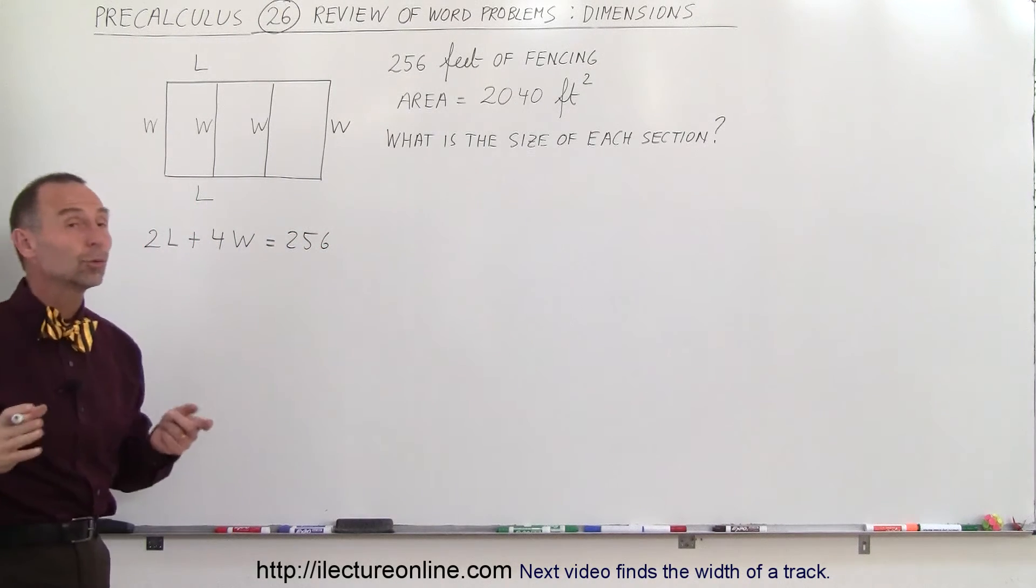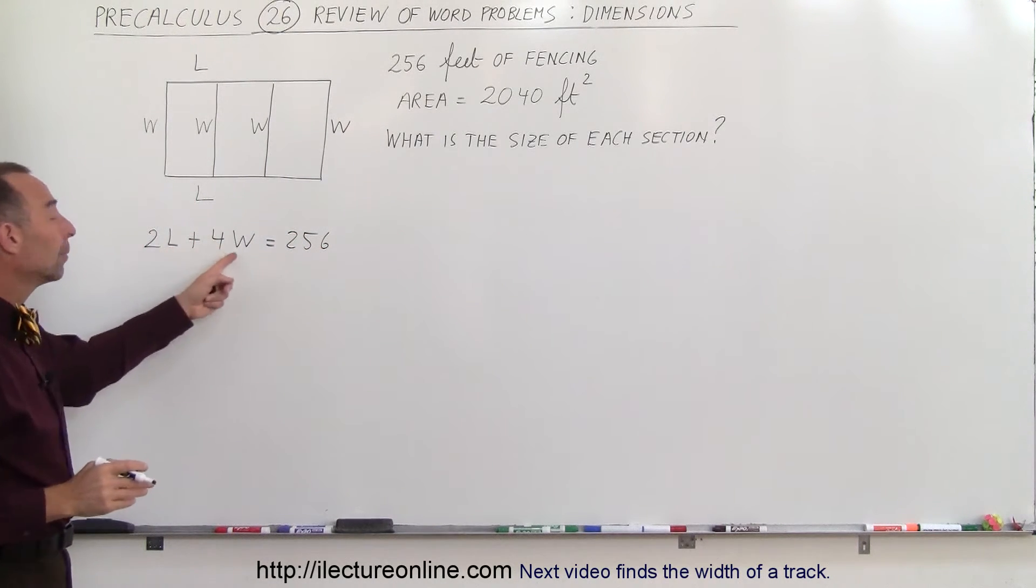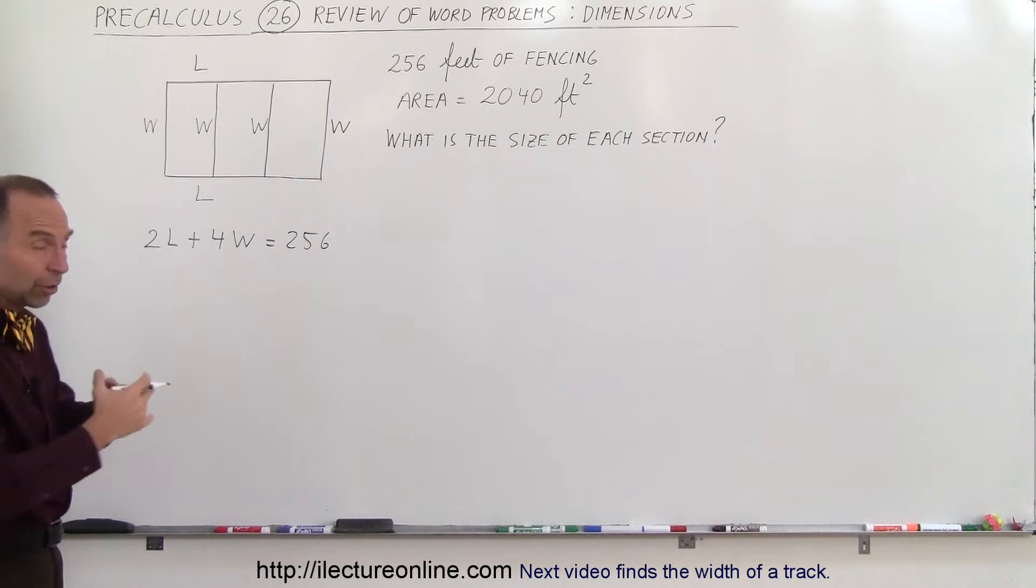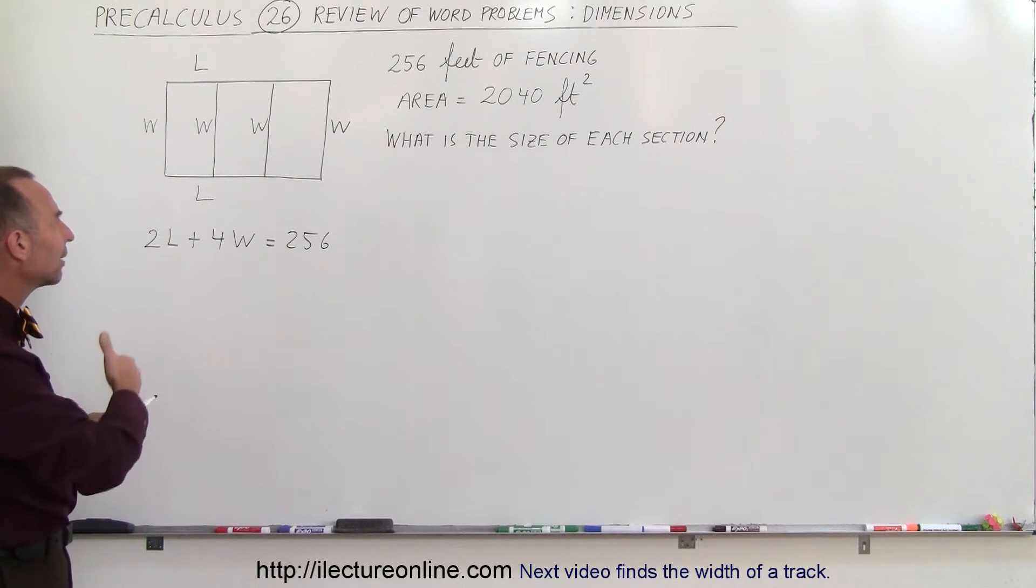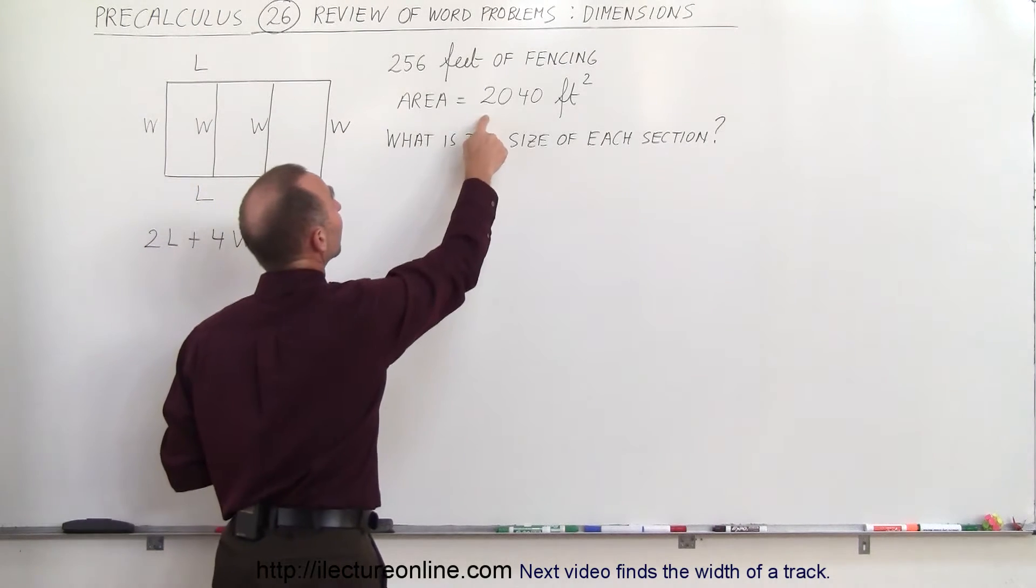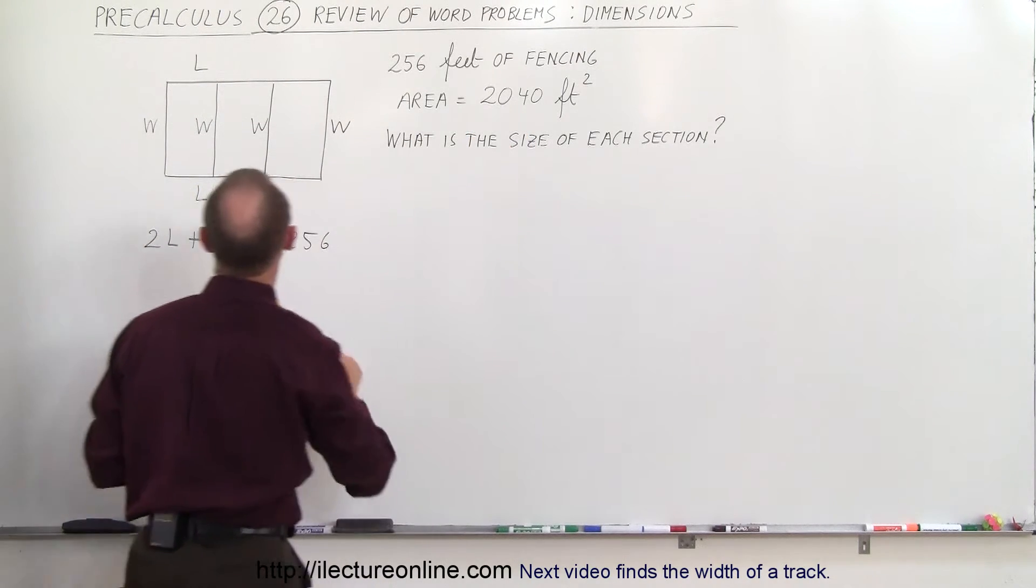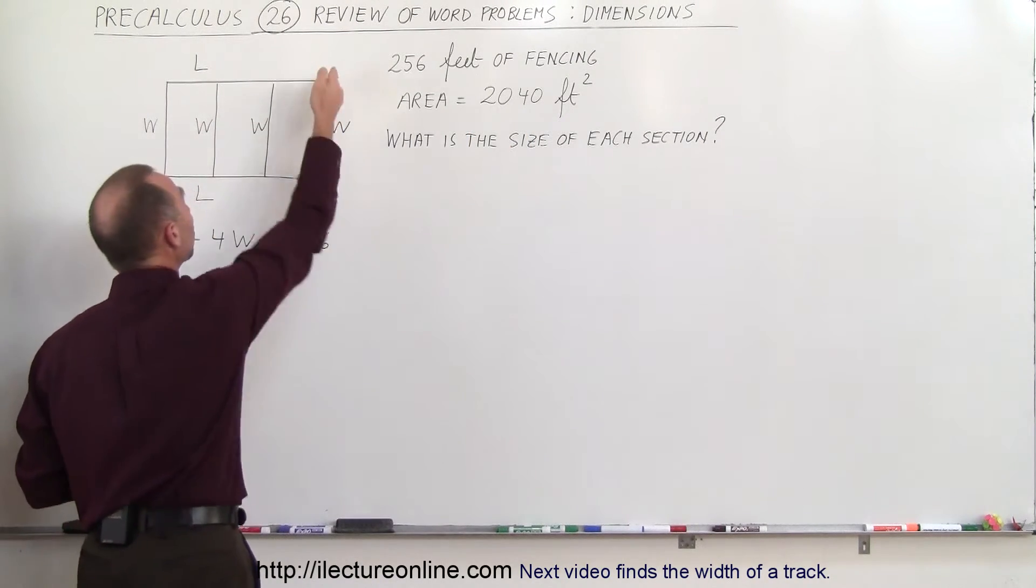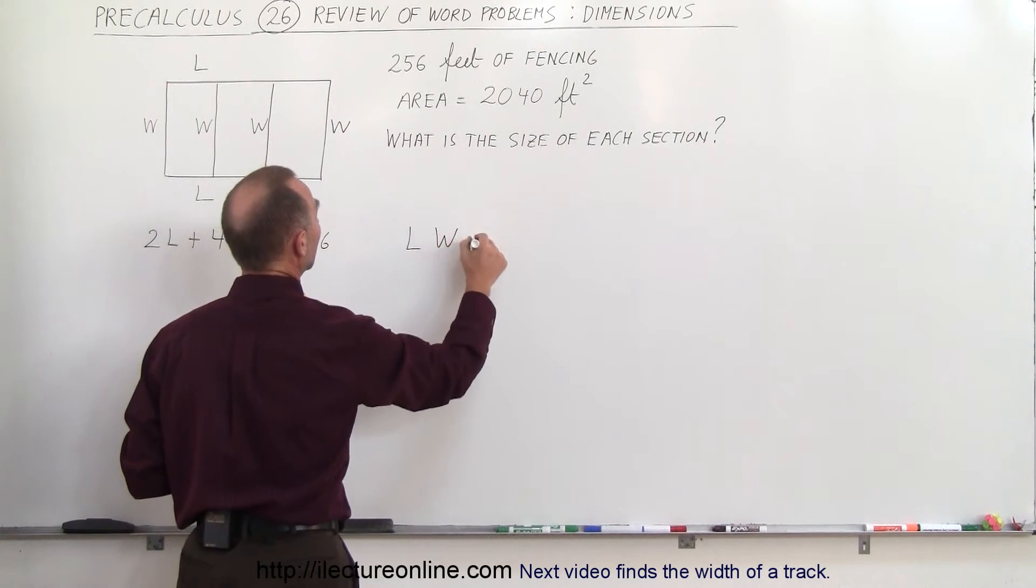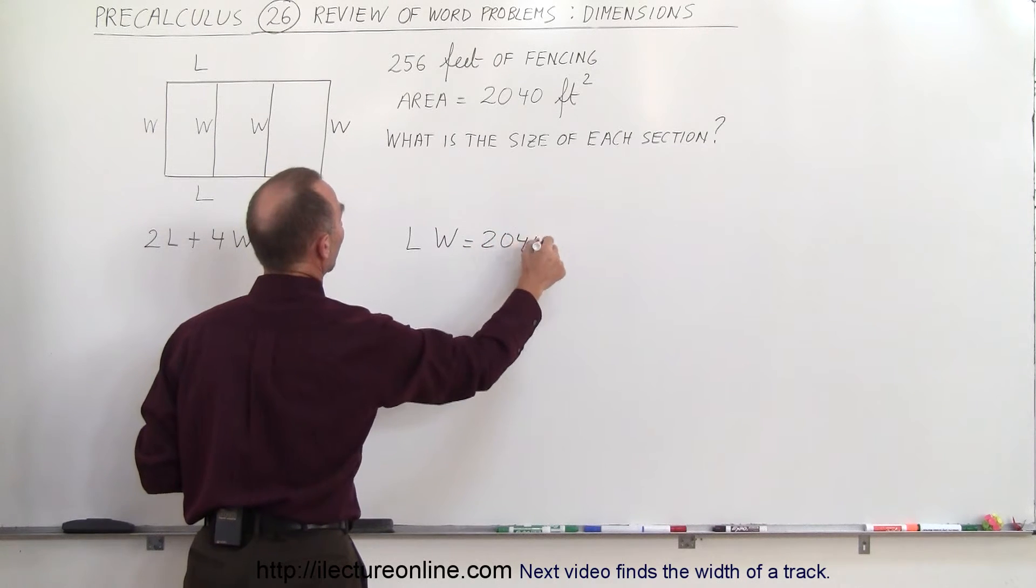But notice in this case there are two unknowns. L and W, the length and the width, they're both unknown and so we cannot solve this equation because there's two unknowns. We have to have another equation that relates length to width and we have another equation because they tell us that the total area is 2,040 square feet which means that the length times the width should be equal to 2,040. So the length times the width equals 2,040.